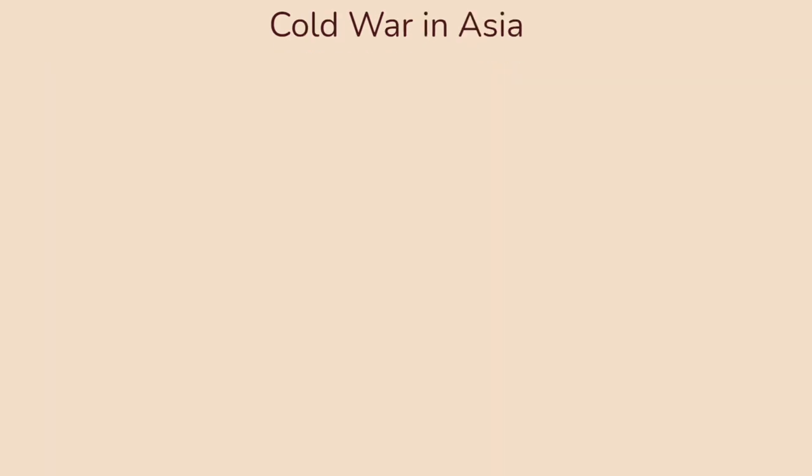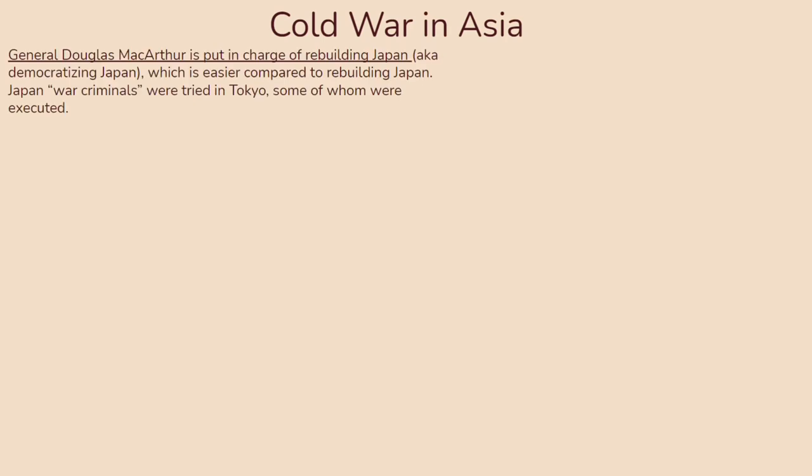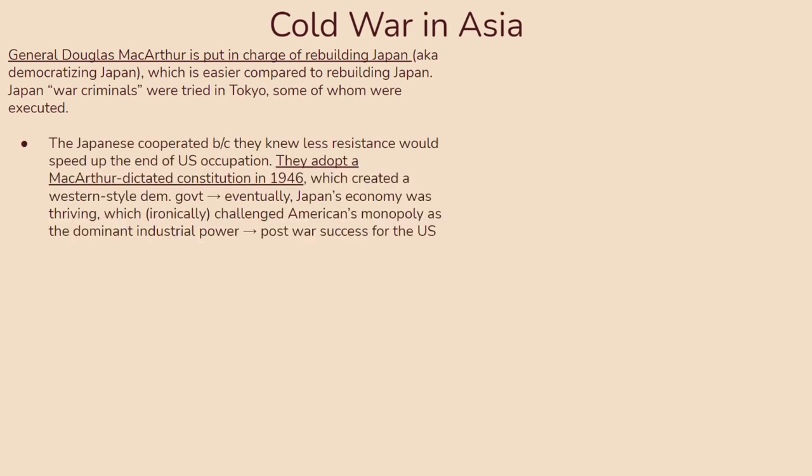Let's talk about the Cold War's impact in Asia. General Douglas MacArthur was put in charge of rebuilding Japan — which in this case meant democratizing Japan. Japanese war criminals were put on trial in Tokyo, where some were actually executed. The Japanese cooperated, knowing less resistance would speed up the end of US occupation. They adopted a MacArthur-dictated constitution in 1946, creating a Western-style democratic government, and eventually Japan's economy was thriving, which ironically challenged America's monopoly as the dominant industrial power.